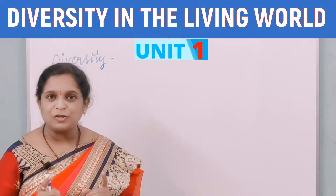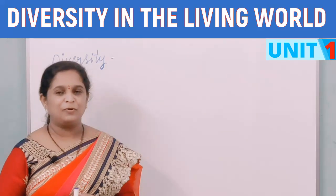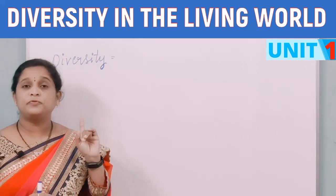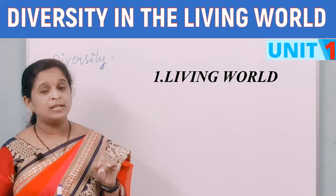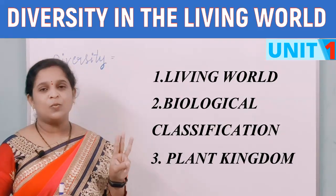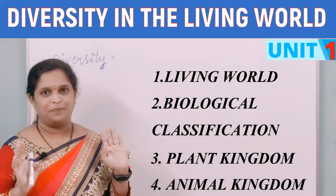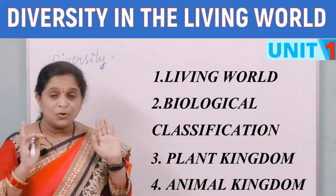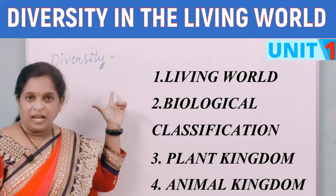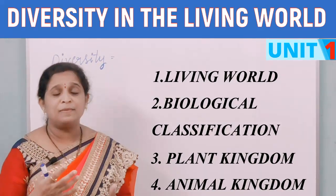Let us get into Unit 1, that is Diversity of the Living World. It consists of four chapters: the first one is The Living World, second is Biological Classification, third one is The Plant Kingdom, and the fourth one is The Animal Kingdom.